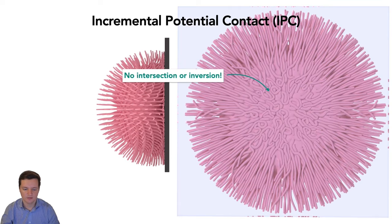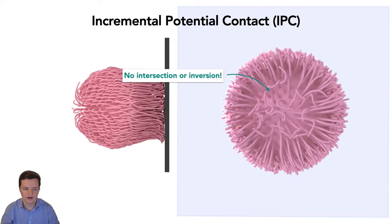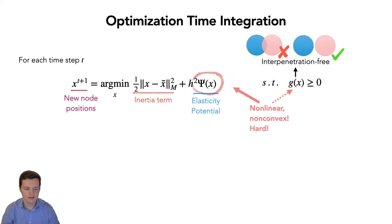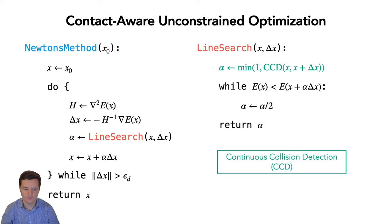Thus, we introduced incremental potential contact method, which is capable of simulating complex contact dynamics, all while provably guaranteeing no intersections or inversions occur. IPC works by replacing traditional gap constraints which are hard to optimize with smooth barrier functions that grow to infinity as distances shrink to zero. This optimization can be solved robustly using Newton's method with line search, where we limit the step size using continuous collision detection.